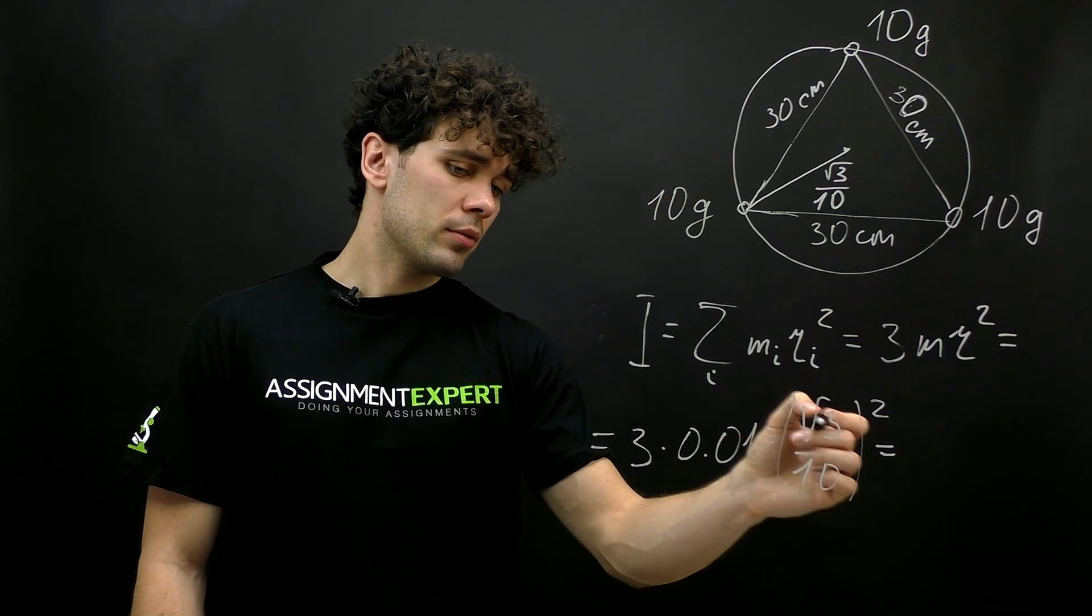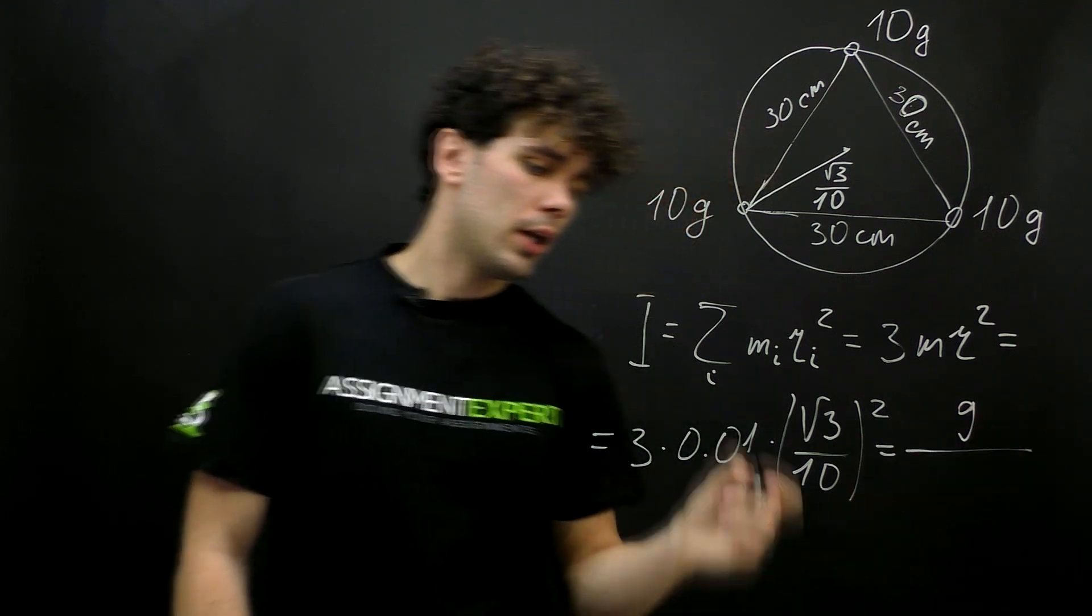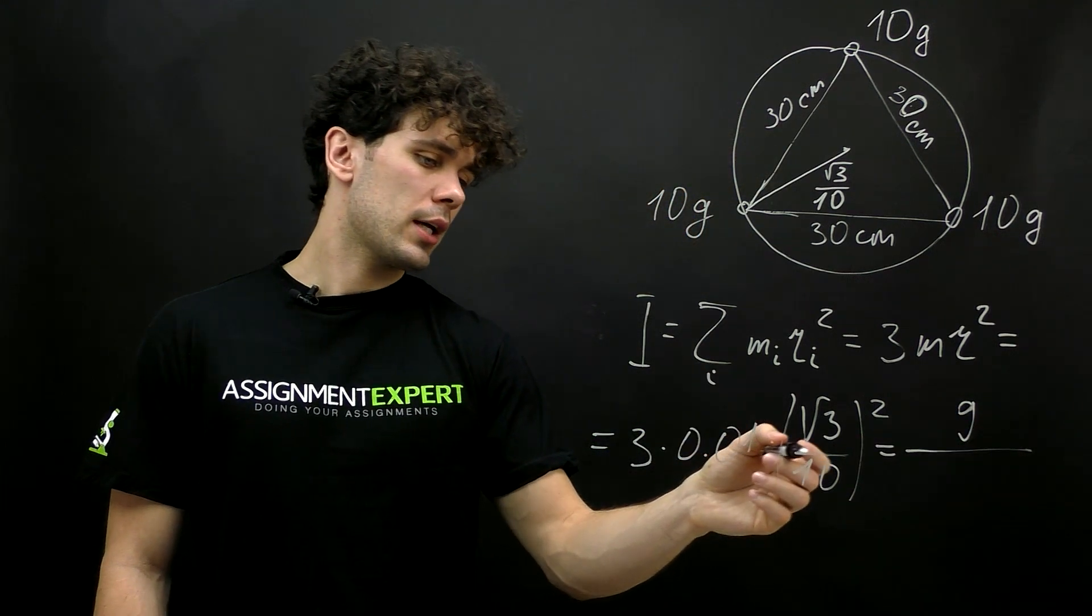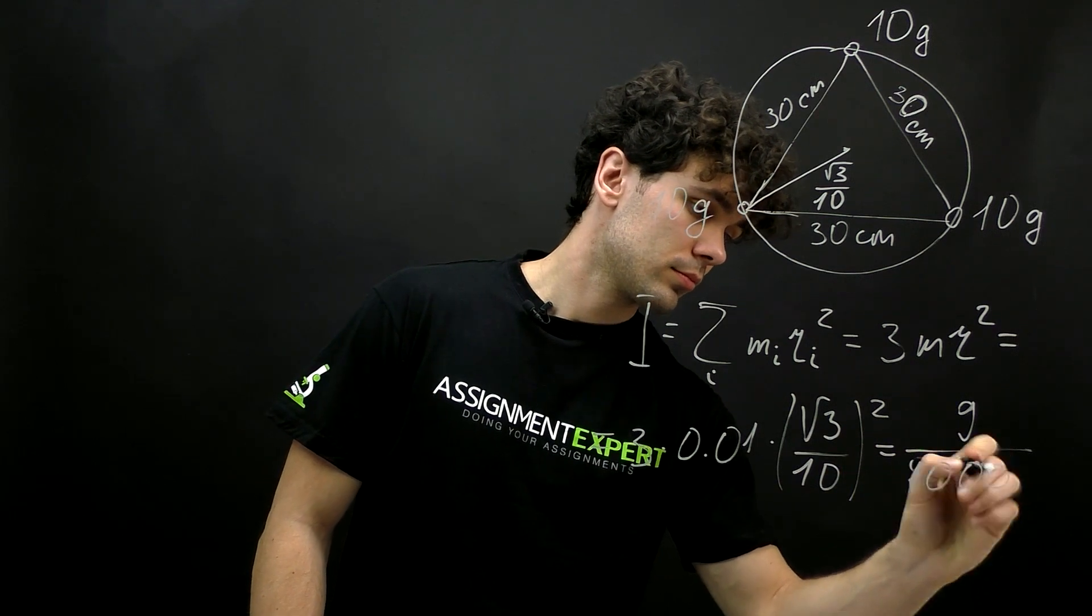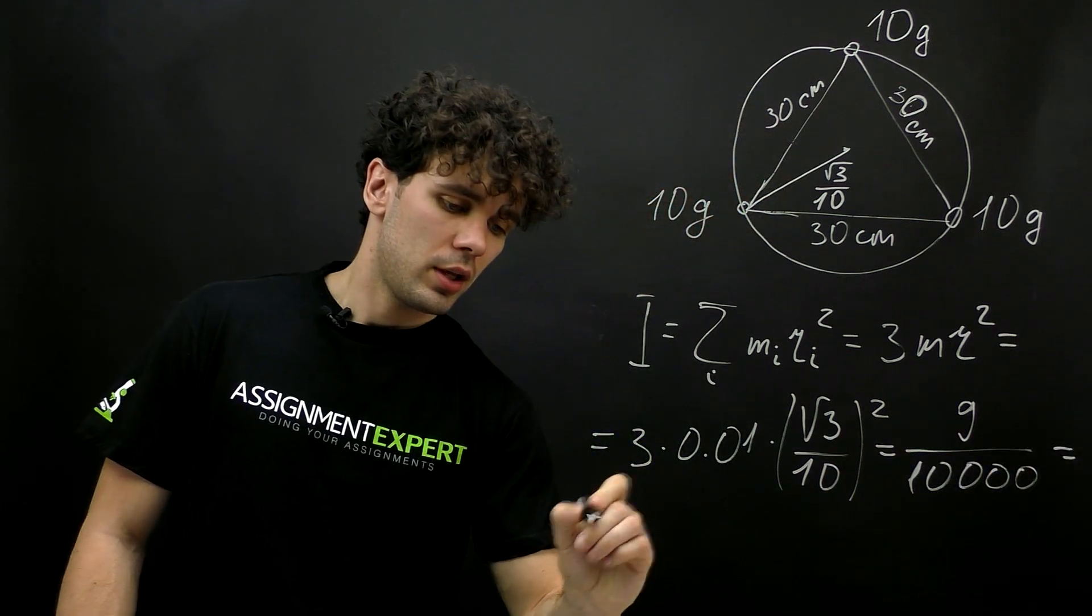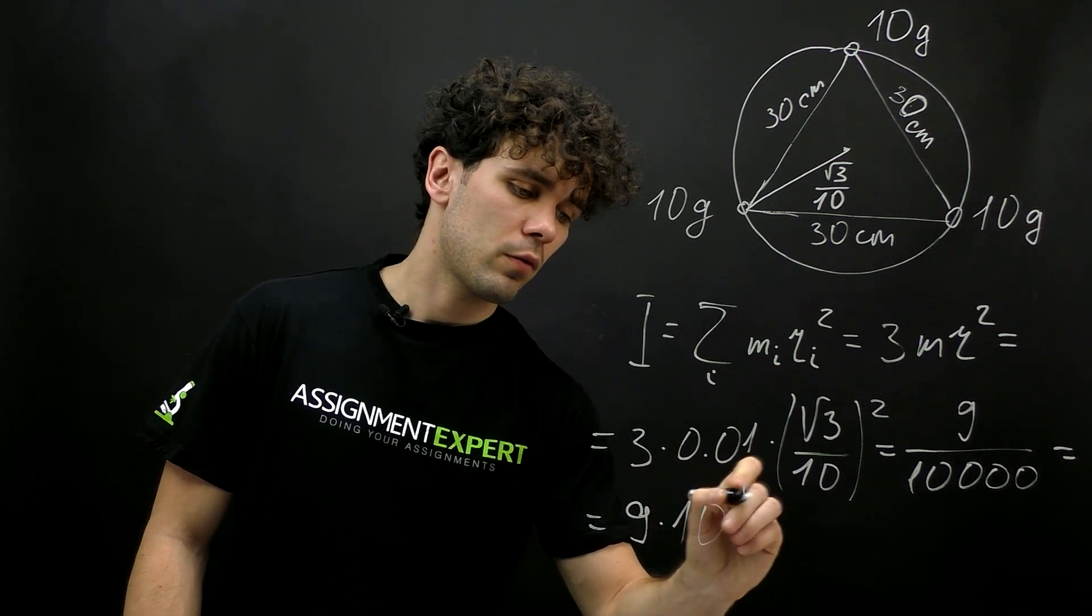Here we get 3 times 3, so 9 in the numerator. And in the denominator, we get 100 times 100, which is 10,000. So the answer is 9 times 10 raised to the negative 4th power.